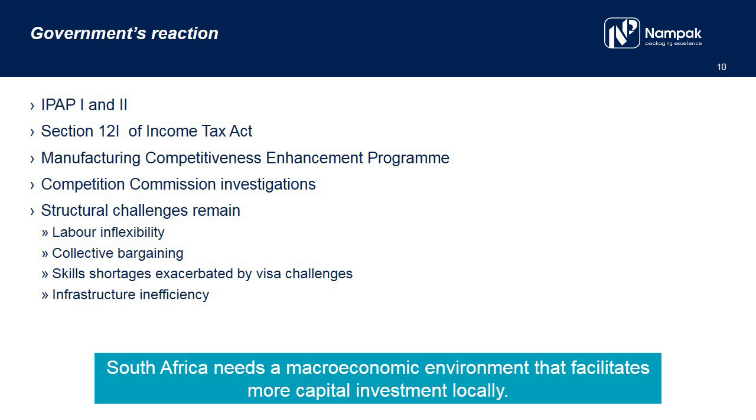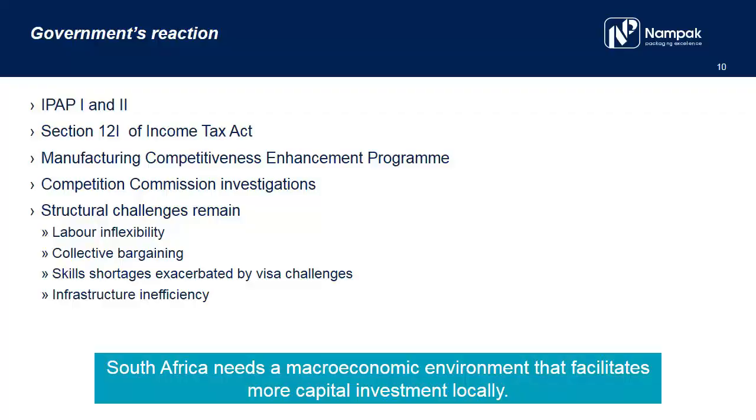So we've had the Industrial Policy Action Plan — that's IPAP 1 and 2. We've had incentives under Section 12I of the Income Tax Act, MCEP which is the Manufacturing Competitive Enhancement Programme, and Competition Commission Investigations. Labor inflexibility is a major challenge for us, and I think there's scope for labor and business to get together to address not only the challenges but the opportunity. Collective bargaining really operates against bigger businesses. We also have serious issues in admitting key skills into the country, and we need to encourage people to come to our country instead of showing them the door.